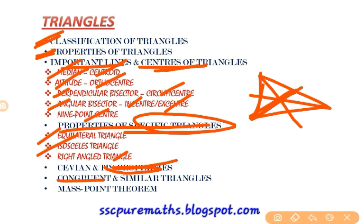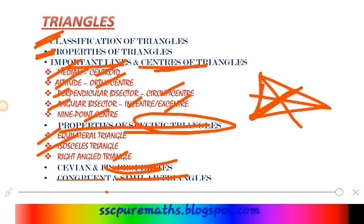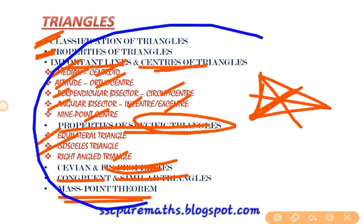What are congruent triangles and similar triangles? Congruent means equal triangles. Next is the Mass Point Theorem — this is not required for DAO or Group 1, but those preparing for SSC CGL or CHSL definitely need to know this theorem, as many problems appear from it. These are the main subtopics in triangles, and all are very important.